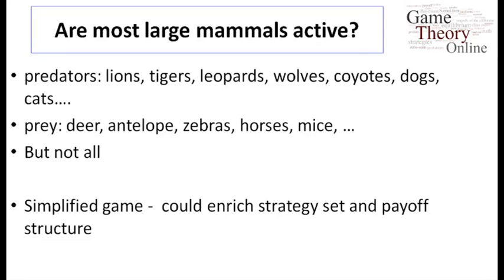We can ask: are most large mammals active? Thinking of predators — lions, tigers, leopards, wolves, coyotes — and most prey — deer, antelope, zebras — yes, they're active. It's not exclusively true; think of sloths, which are quite passive. But we end up with a prediction that seems to match some things. We could enrich the game to account for different habitats, climate changes, and geography, which would lead to more complicated analysis. For our purposes, this begins to illustrate what game theory can do.